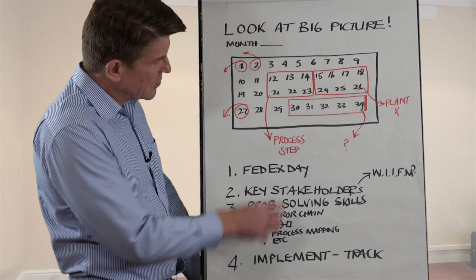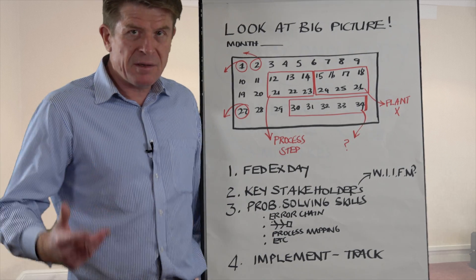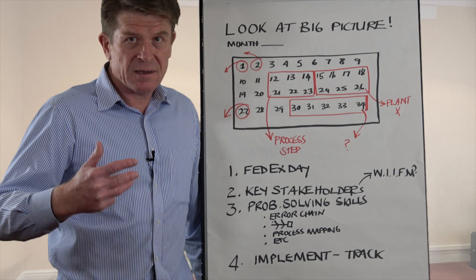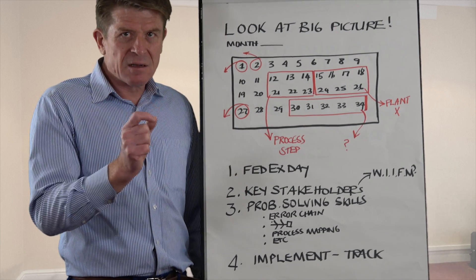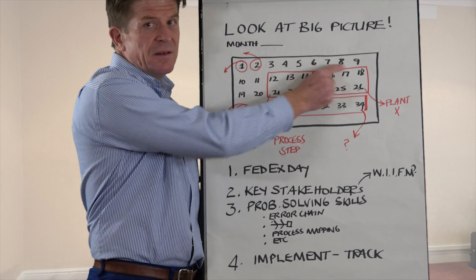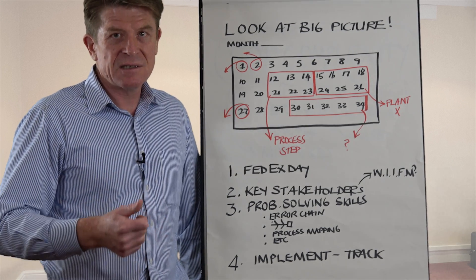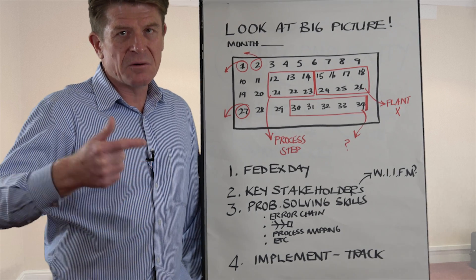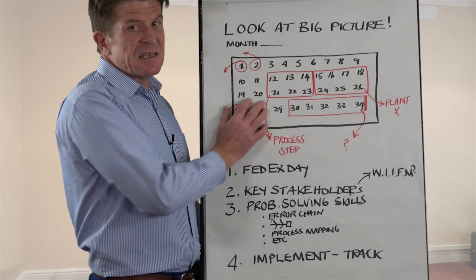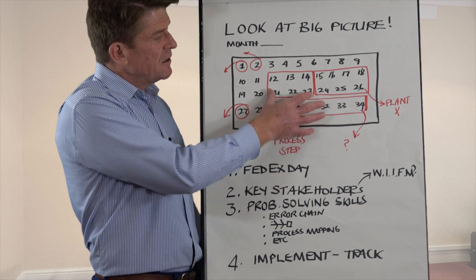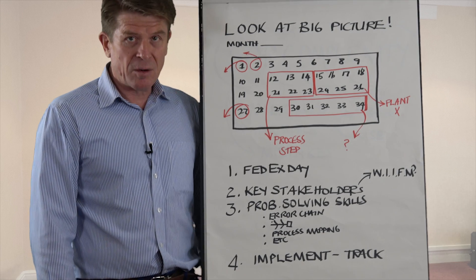The output from the FedEx Day is obviously the immediate implementation of the recommended preventive actions. So in summary, so often companies tie themselves up in knots because they try to investigate every deviation to the same level of detail. That's when you get reoccurrence, because the corrective and preventive actions go no further than retraining or adding additional detail to the SOP, batch manufacturing record, or work instruction. By taking this approach, you're actually looking for patterns and trends and focusing on common themes.